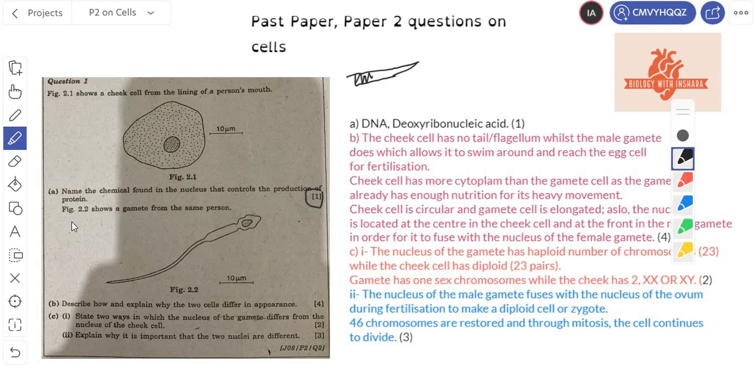Let's move on with the next question, easy enough. Figure 2.2 shows a gamete from the same person. Now this here is a male gamete cell. Part B: describe how and explain why the two cells differ in appearance. Alright, so now look at the physical appearance of the two cells. The question is asking how do they differ, like this is big, this is long, and why. Like there has to be a reason why this is long and this is circular. That basically comes under specialization.